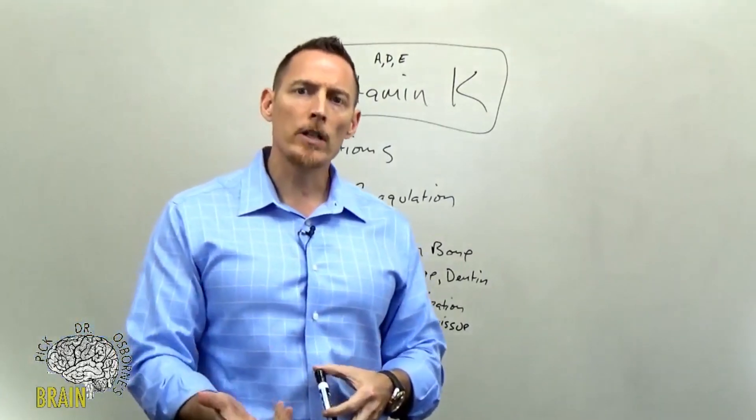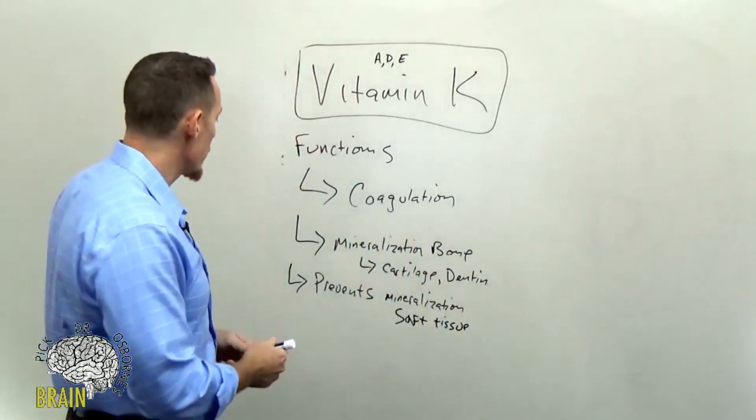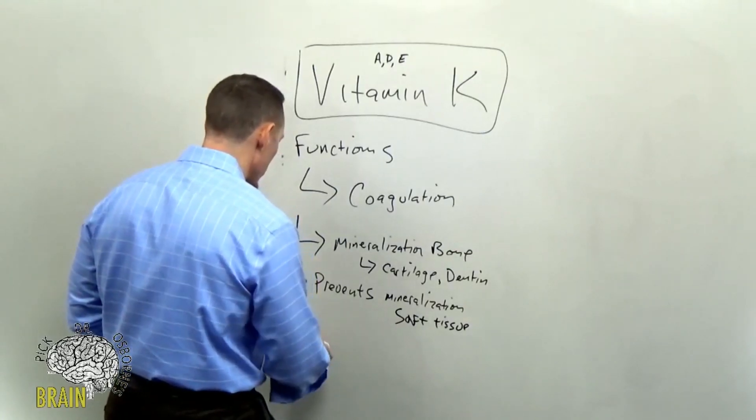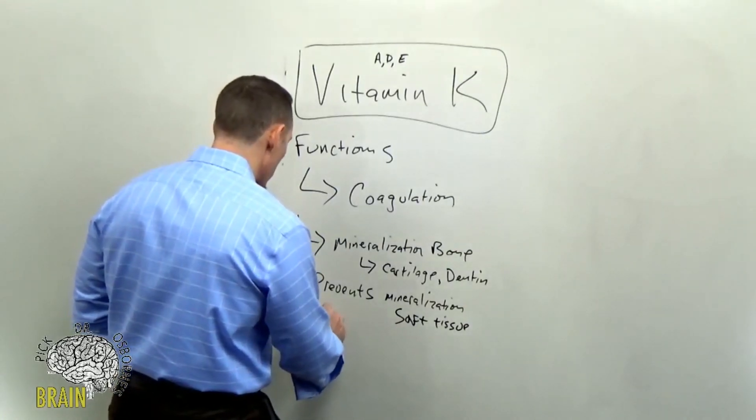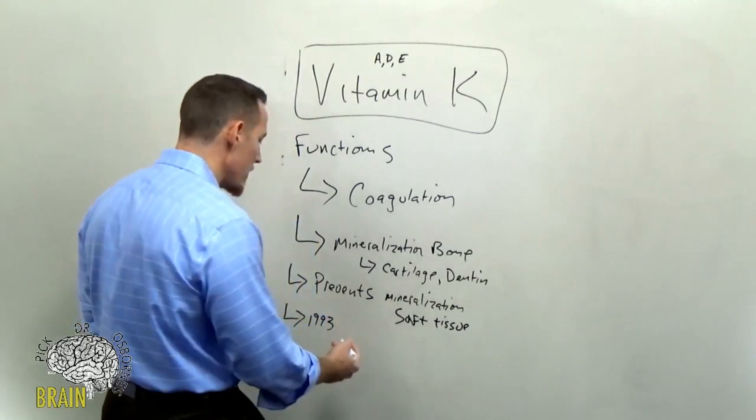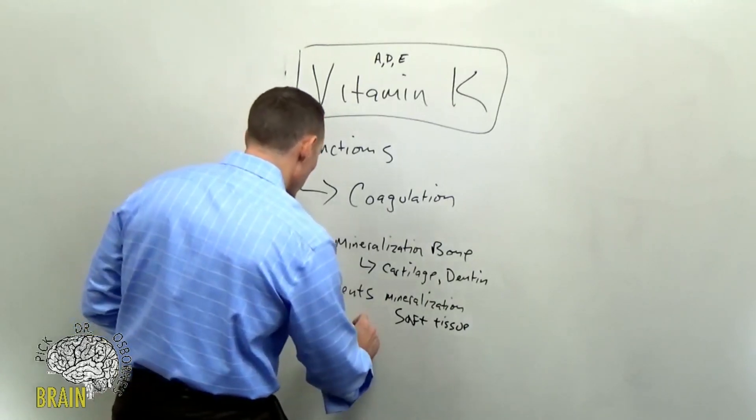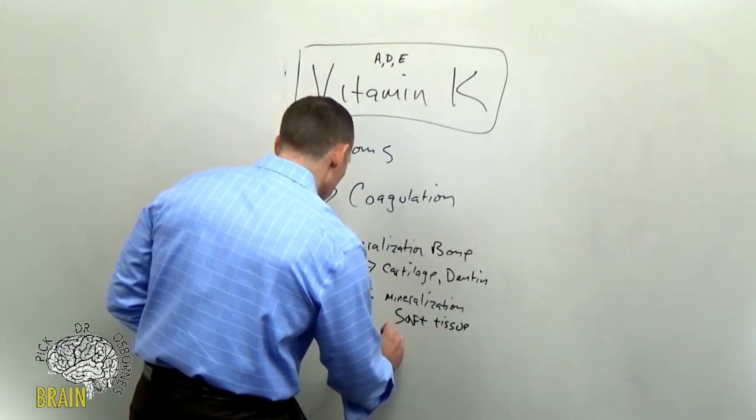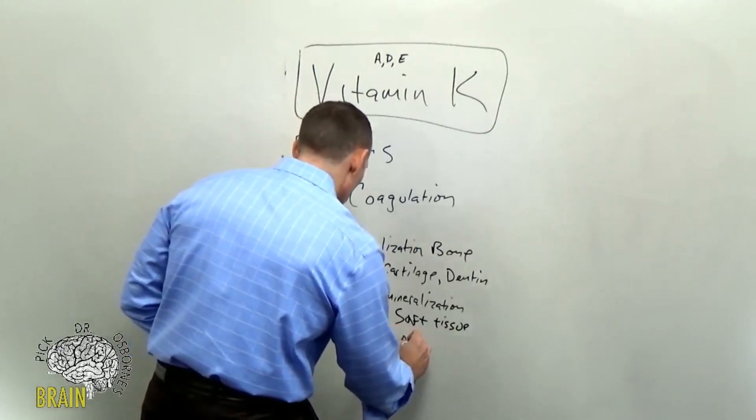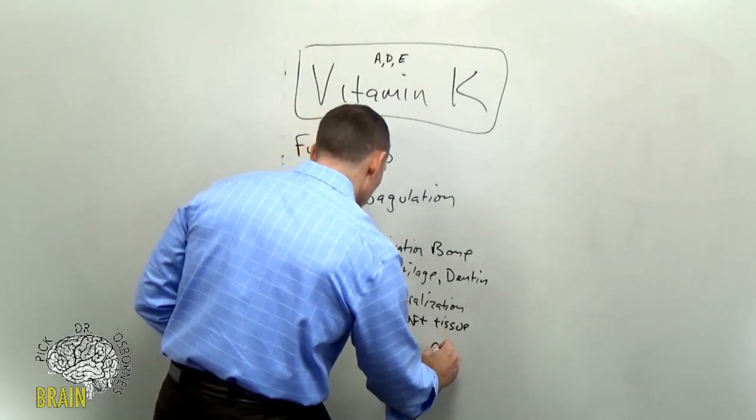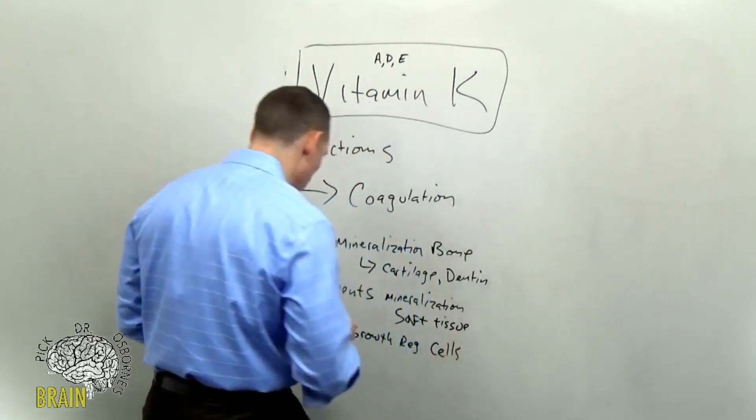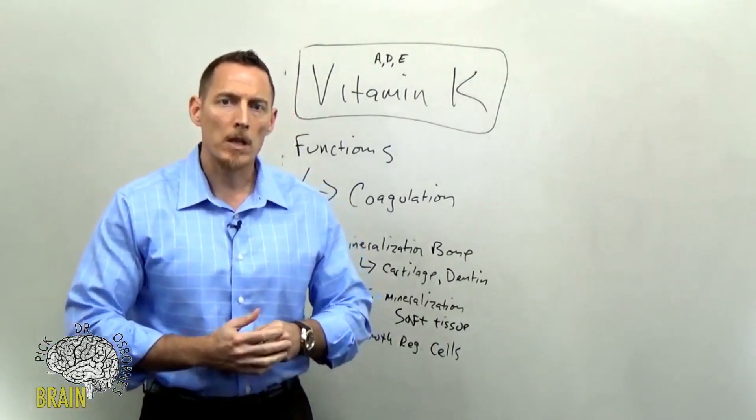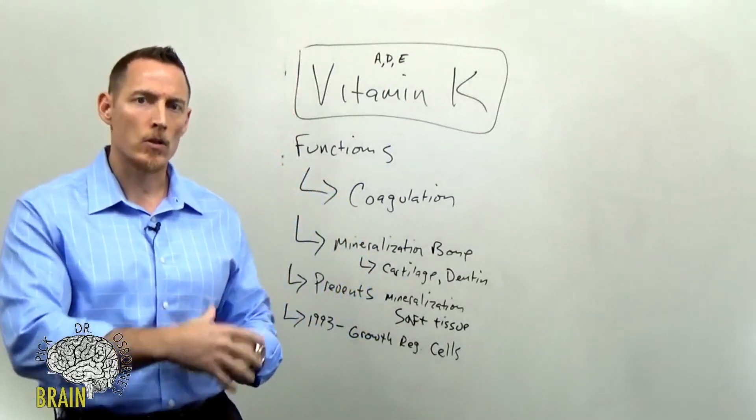Now, there's another newly discovered, I say newly, in science, it's new. It takes 30 plus years for new scientific discoveries to really make it to mainstream knowledge. But in 1993, it was discovered that vitamin K was important for growth and growth regulation of cells. So it helps to regulate the growth of cells. In that regard, it has some anti-cancer and cancer controlling impacts. So we're going to be learning a lot more about this as the research unfolds.